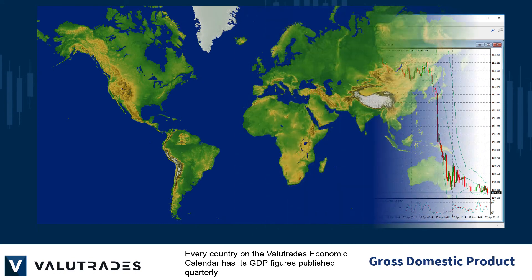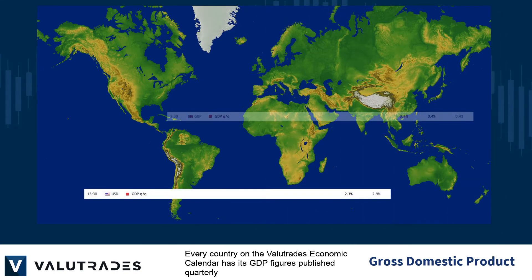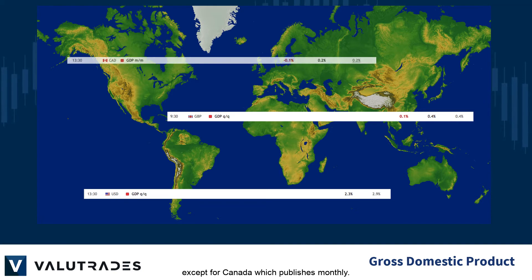Every country on the ValueTrades economic calendar has its GDP figures published quarterly, except for Canada, which publishes monthly.